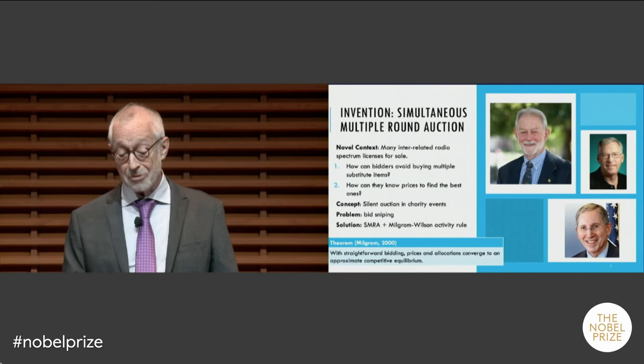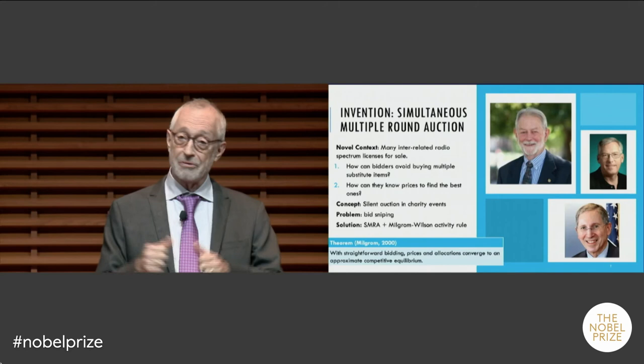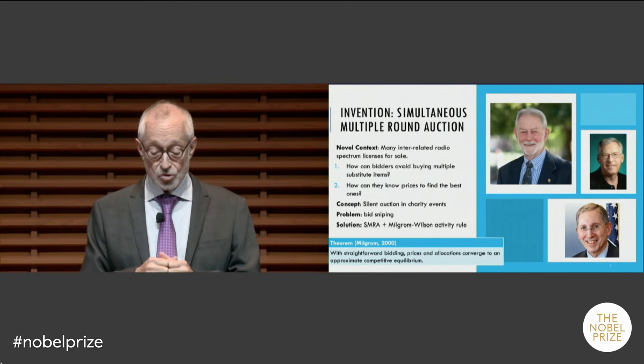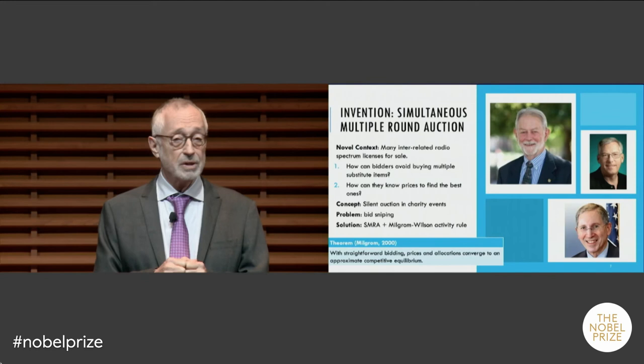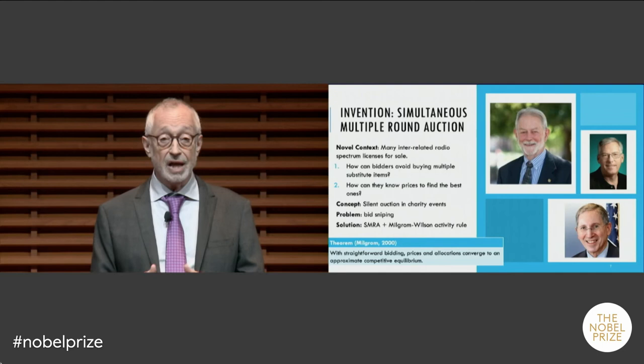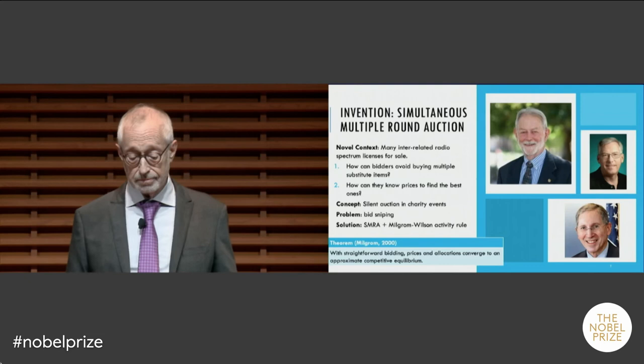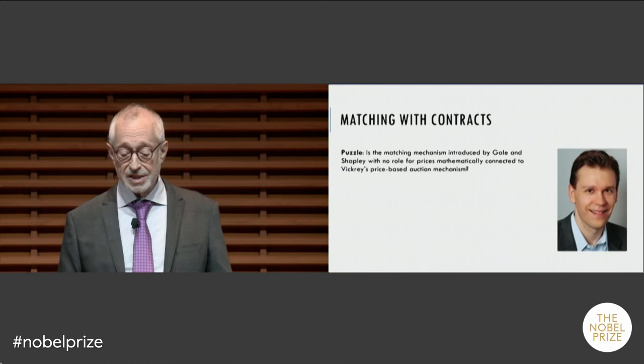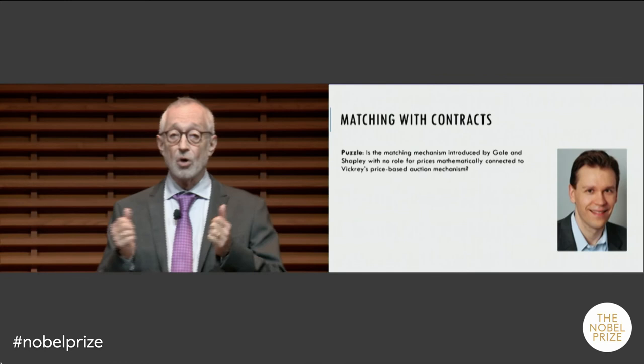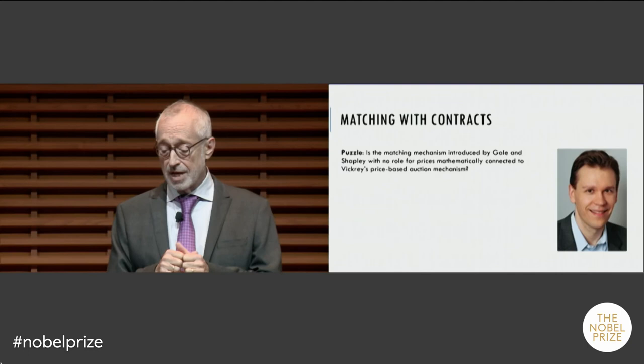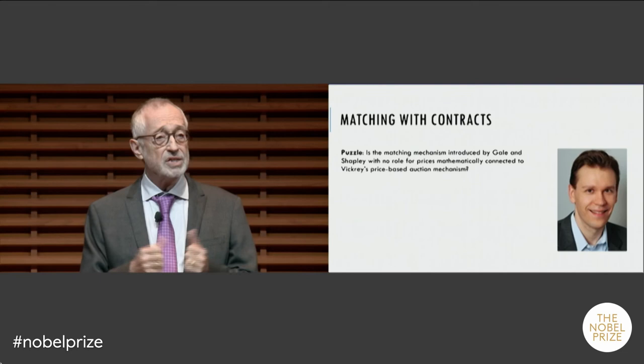I wrote a theorem that if bidders bid straightforwardly, this mechanism would lead to prices and allocations converging to an approximate competitive equilibrium — the prices that emerge would be at a reasonable level and the allocations would be efficient. I then began thinking, while talking to Alvin Roth, another Nobel laureate who was at Harvard and is now my colleague at Stanford, who had been doing work on matching markets — redesigning the National Resident Matching Program and organ exchanges — mechanisms that didn't have money involved at all.